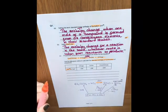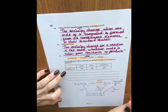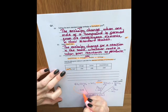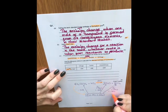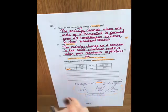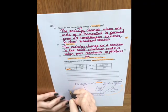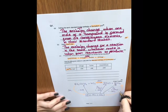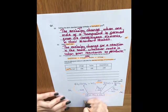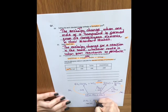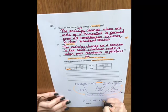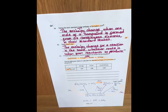Now Hess's law tells us that the enthalpy change for this reaction, ΔHc, is the same as going from the reactants down to the constituent elements and back up to the products. So if we call this Δh1 and this Δh2, it tells us that ΔHc equals Δh1 plus Δh2.